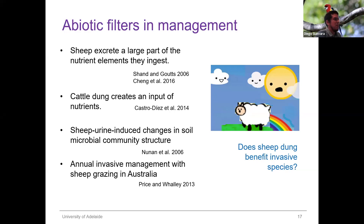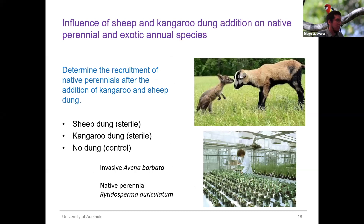To explore this, I will assess the influence of sheep and kangaroo dung addition on native perennial and exotic annual species. I chose kangaroo because it is a native mammal that feeds on grass, and we can compare the effect with that of sheep, which is not native to the system. I want to determine the recruitment of native perennials after the addition of these two kinds of dung. I will conduct a glasshouse experiment employing Avena barbata — an exotic annual grass — and the native perennial Rytidosperma. I will also sterilize the dung before using it to constrain the experiment to the nutrients.